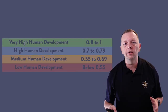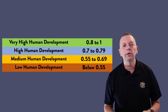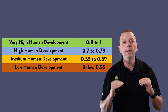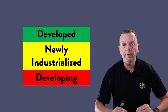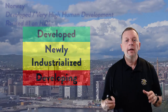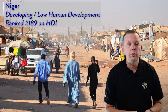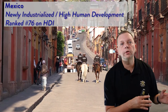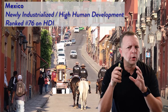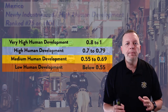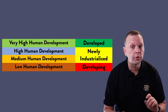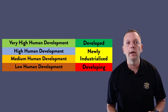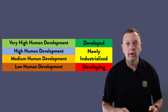Once each country has an HDI score — remember, this is between zero and one — the UN separates these countries into four categories: very high human development, high human development, medium human development, and low human development. Many times you'll simply hear countries described as developed, developing, and newly industrialized. Developed countries are essentially rich countries, developing countries are poor countries, and newly industrialized countries are those transitioning from developing to developed but not quite there yet. This roughly maps to: very high HDI = developed, low HDI = developing, and high and medium HDI = newly industrialized.